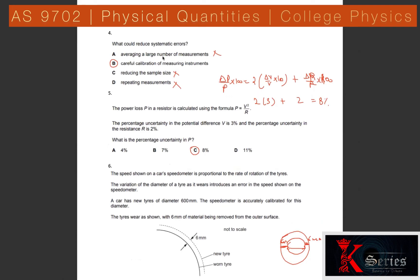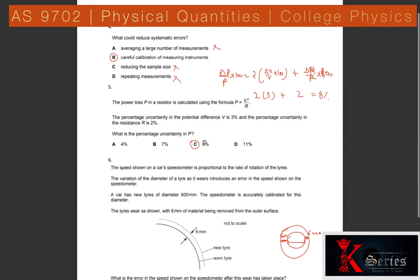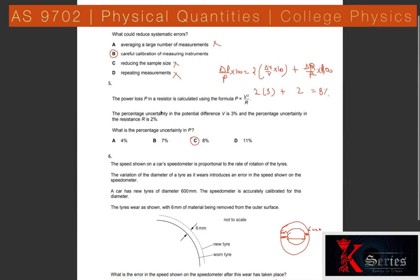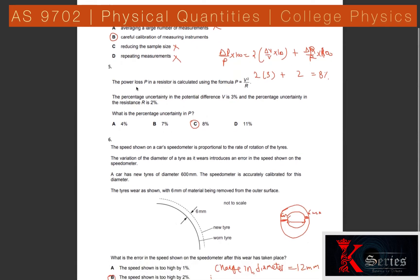Question 4: What reduces systematic error? Taking averages cannot correct systematic error, nor can reducing sample size or repeating measurements. The correct answer is careful calibration of the measurement instrument, which can reduce systematic error.